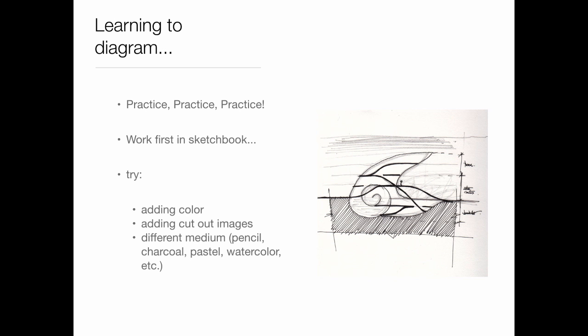When you move into the design studio level, you're constantly going to be asked to give a couple of diagrams of your idea so you can quickly have a dialogue about what your project is. Sketchbooks are the best place for this because you can get your little drawings out — it's usually just a quick sketch, and a sketch can turn into a diagram really easily. If you're struggling, try adding color, cutting out images, adding text, or try a different medium.